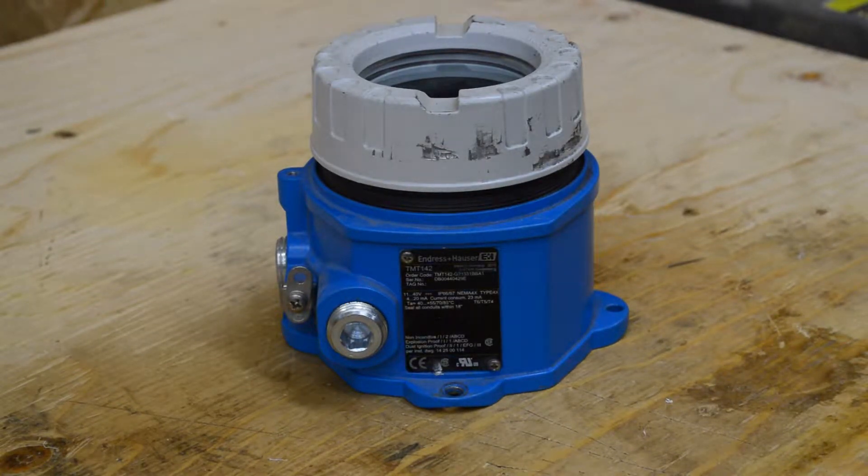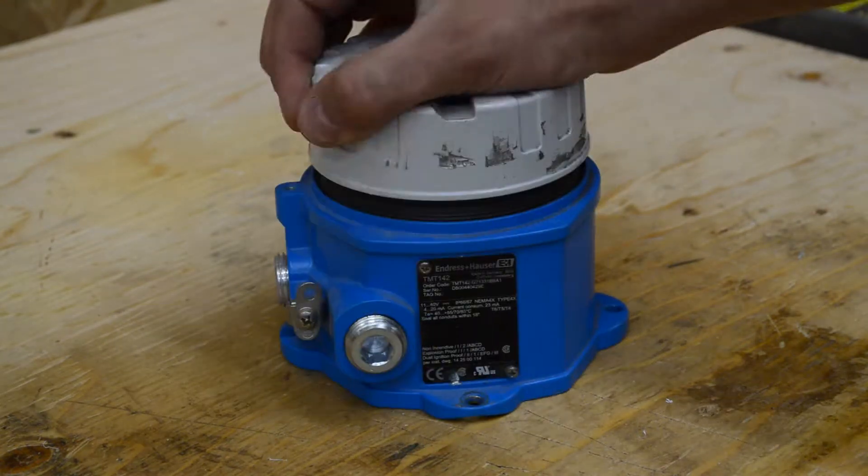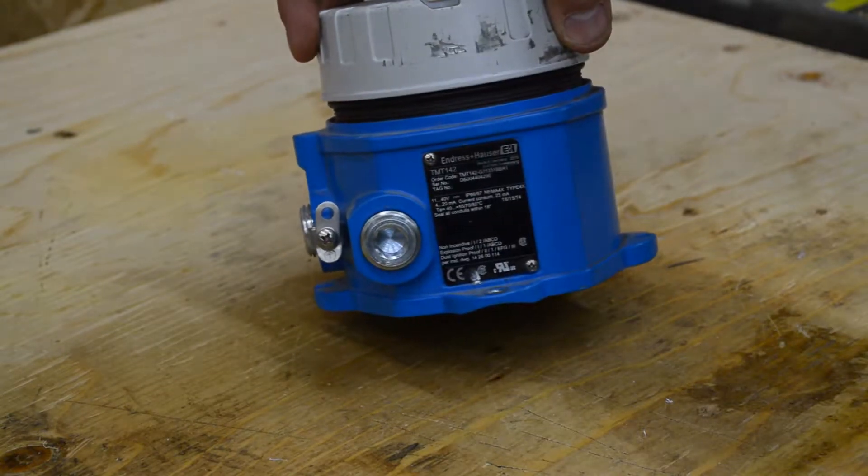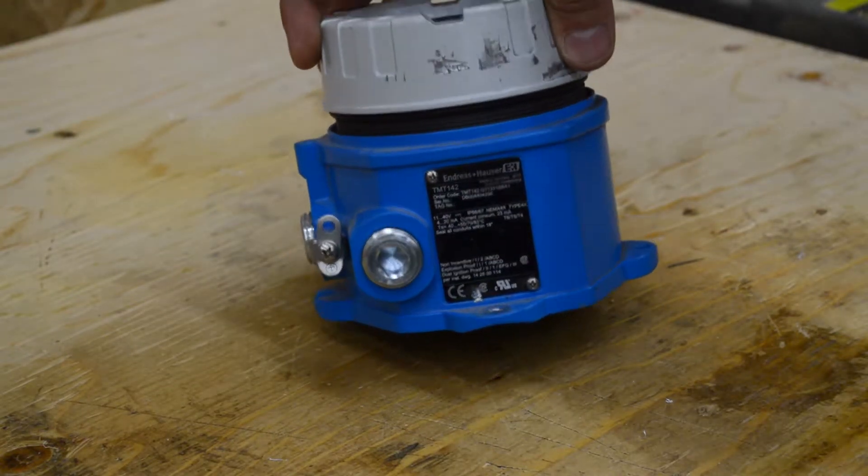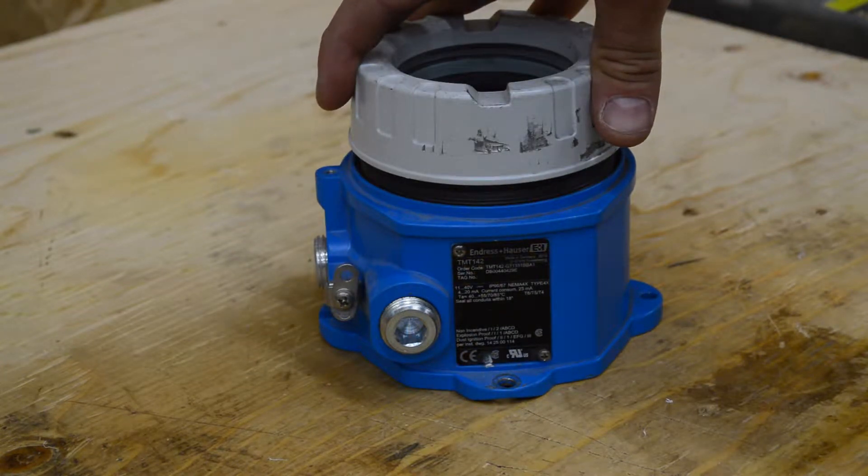Alright, welcome back. Today we've got a pretty cool project here. I managed to get my hand on an Enderson Hauser TMT142, which is an industrial temperature transmitter. It'll do RTDs, thermocouples - you can have both of them plugged in and it'll send out a 4-20 milliamp signal. We're going to try to get into this thing.